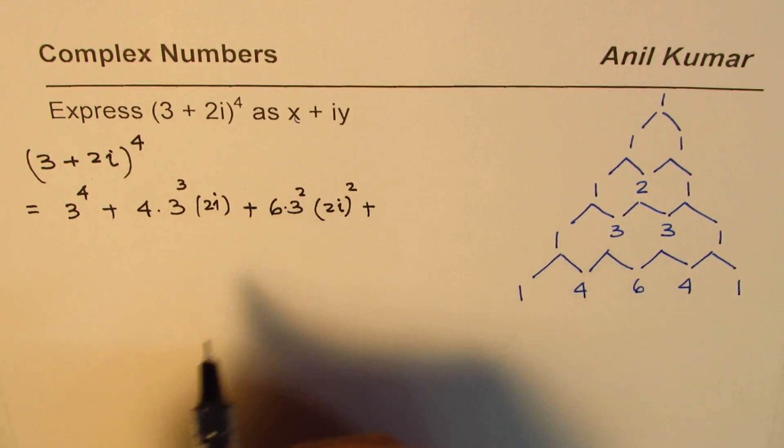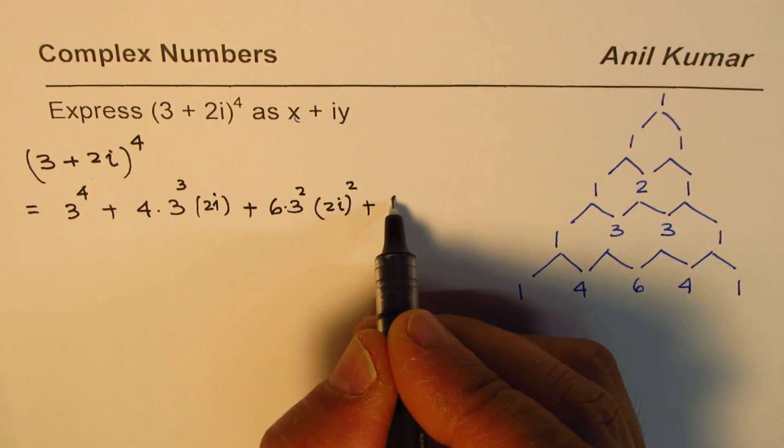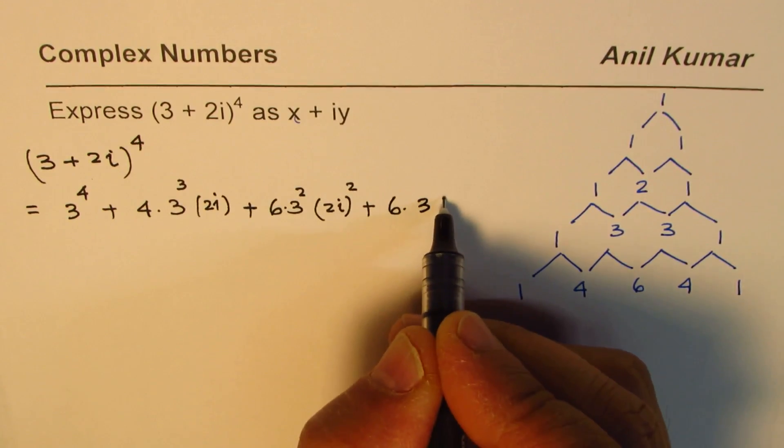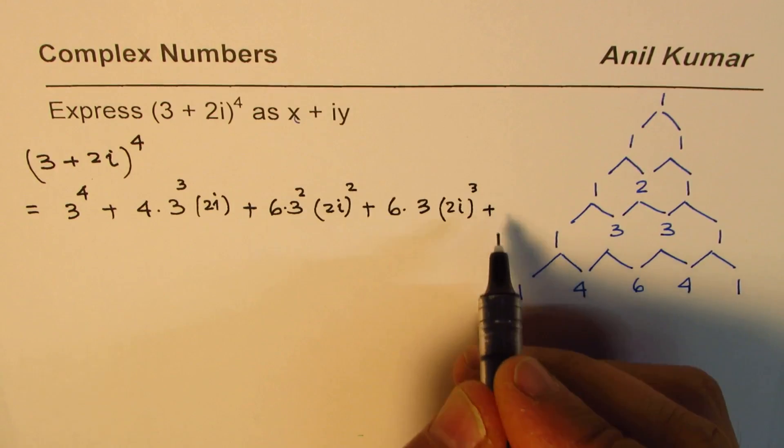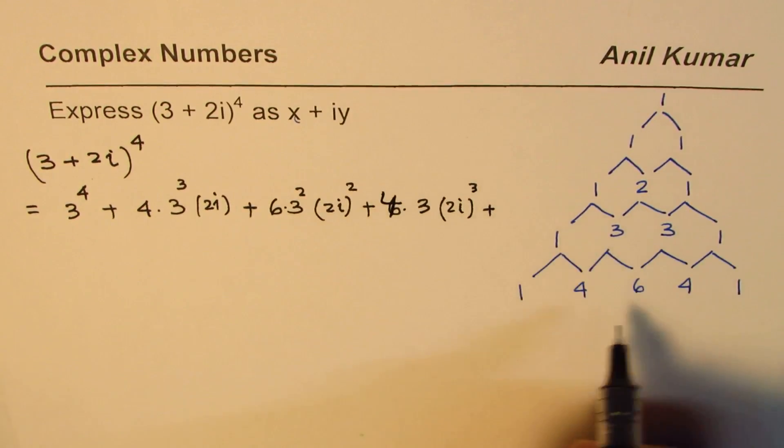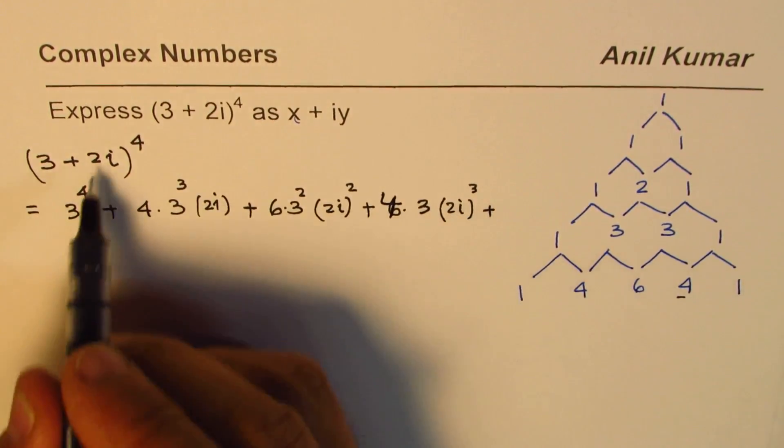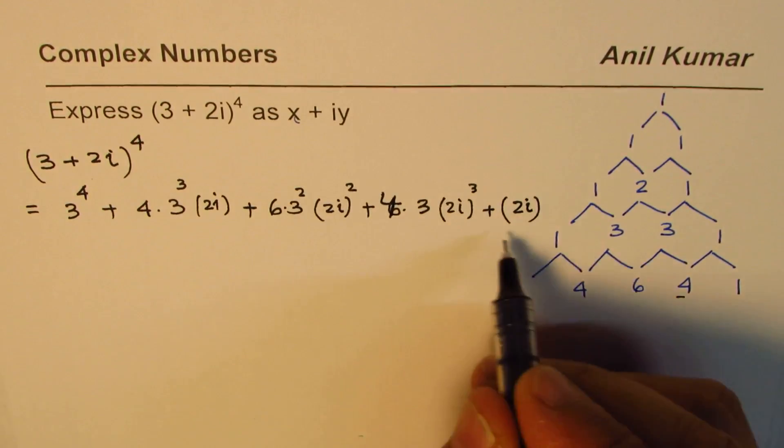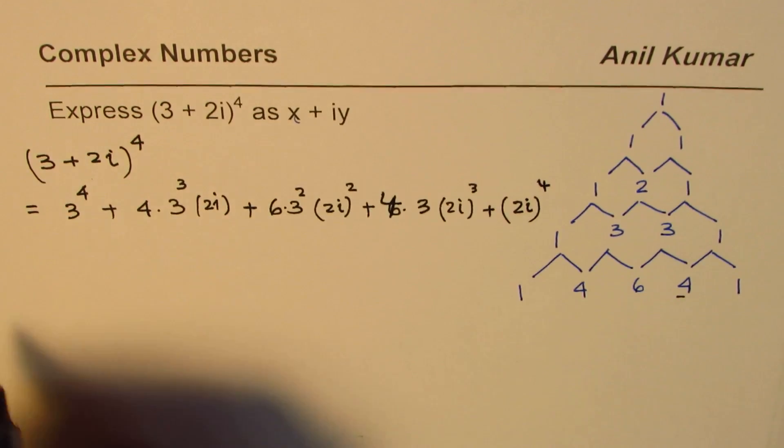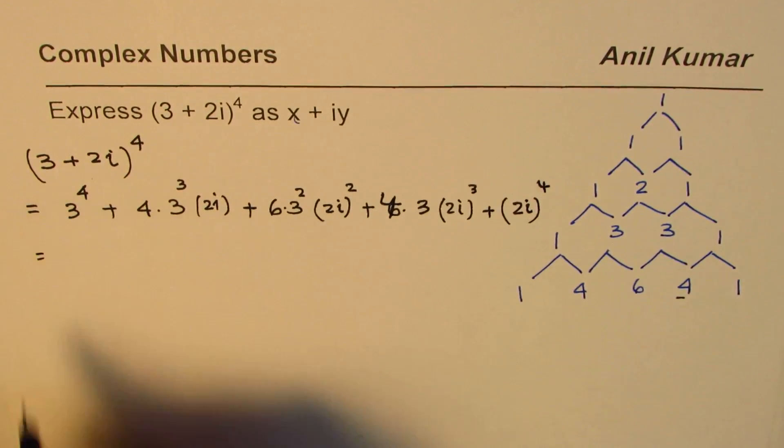Plus, and this power will reduce by 1, so we have plus 6 times 3 times 2i cube, and the last term will be - I'm sorry, this should be 4, sorry, this coefficient 4 - the last term will be 2i to the power of 4, coefficient is 1.